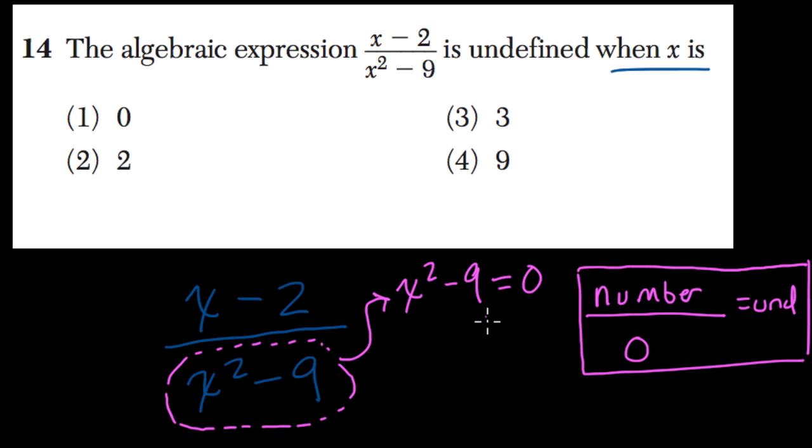So I'll solve for x here. I'll add 9 to both sides, and then I get x squared equals 9. If I take the square root here, x could equal positive or negative 3.